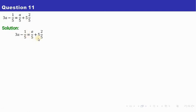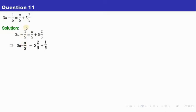This is the given equation. As we know, whatever unknown is there has to be kept on the left hand side. That is why I am taking this a/5 to the left hand side — it becomes minus a/5 — and this number will go to the right hand side, becoming plus. Here we have got a mixed fraction, so if you convert this into a common fraction, it becomes 27/5.